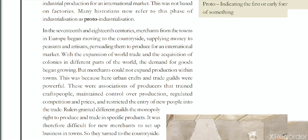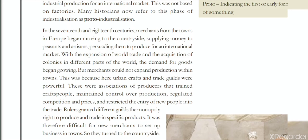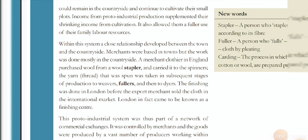That was the early industrialization phase. At different times, producers made their guilds — which are like unions. Merchants would go to the countryside, distribute work, and get it completed. In small town areas, people also had a surplus income source since work was done in open fields. Because they didn't always get money or sufficient livelihood otherwise, they easily accepted this work. Within this proto-industrialization system, a close relationship developed between the town and the countryside — merchants were based in towns but work was done mostly in the countryside.